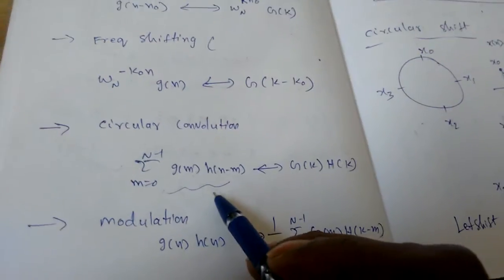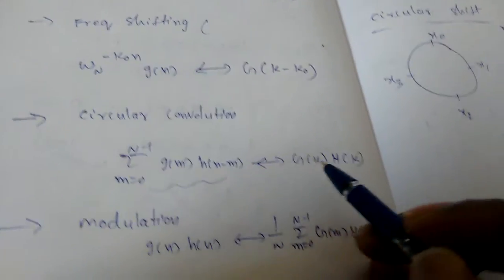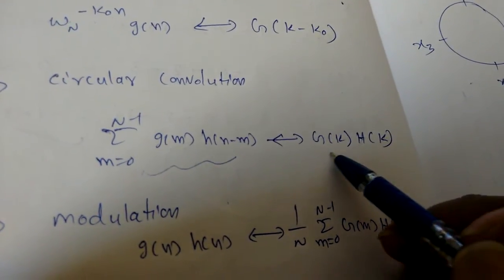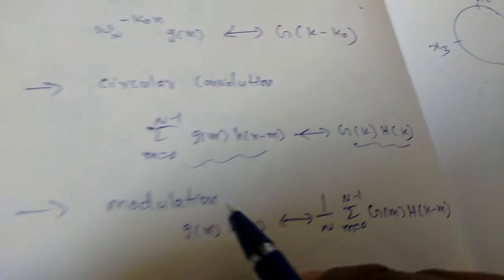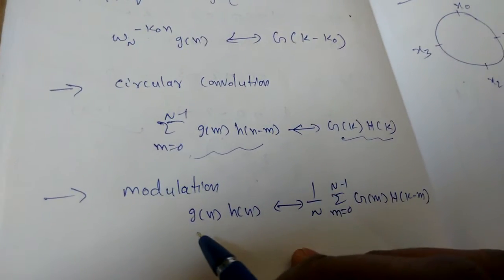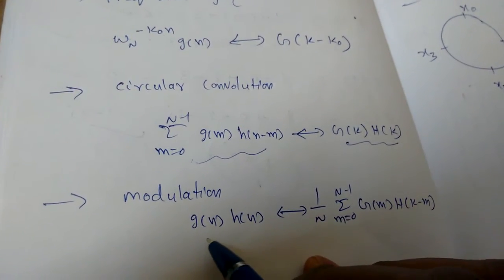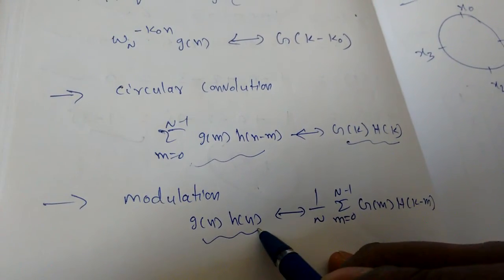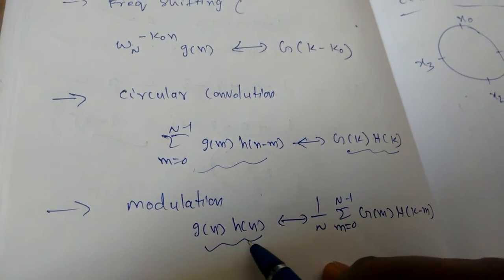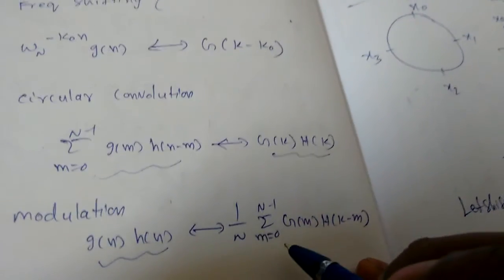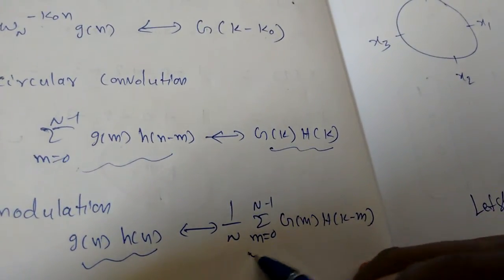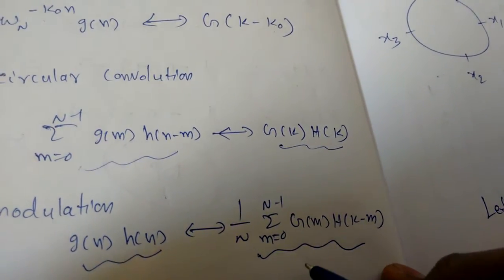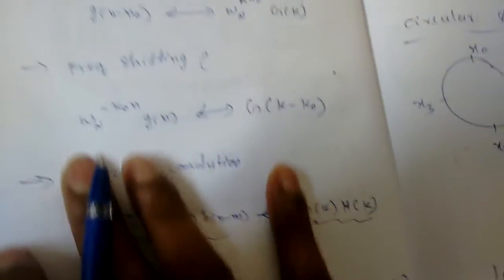The next property is circular convolution: if there is convolution at the input side, the DFT side gives multiplication. Next is modulation: if there is multiplication in the time domain, the DFT domain gives convolution.